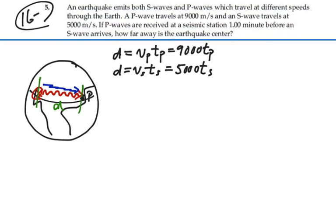We know that P waves are received one minute before an S wave arrives, so the time for an S wave is equal to the time for a P wave plus one minute. Let's work with seconds, so that's plus 60 seconds.